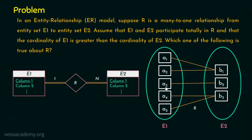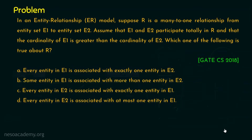Yes, every entity in E1 is exactly associated with one entity in E2. So A1 is associated with B1, A2 is associated with B1, A3 with B2, and so on. It's not like A1 is associated with B1 as well as B2 — every entity in E1 is associated with exactly one entity in E2. So option A seems to be true.